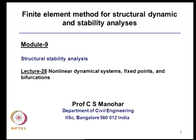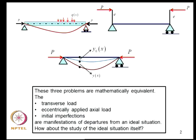We will continue with discussion on structural stability analysis. I would like to introduce in this lecture some elementary notions about fixed points and bifurcations in nonlinear dynamical systems. We considered beam columns and three situations which were departures from an ideal situation: a beam carrying axial load plus transverse loads, the axial load being applied eccentrically, or the axial load applied on a beam which is not initially perfect with an initial imperfection w-naught of x. We showed that all three problems are mathematically equivalent, and for certain values of P the response becomes large and the structure loses its stability.